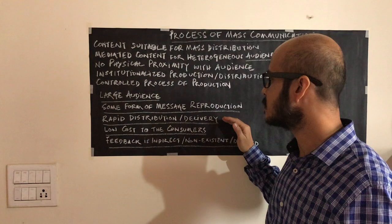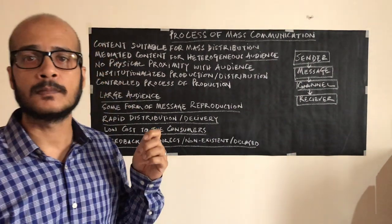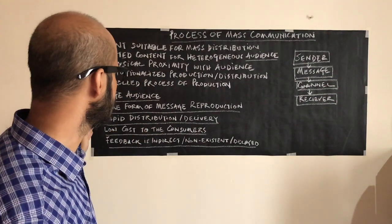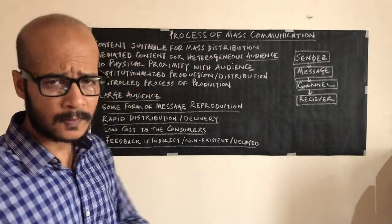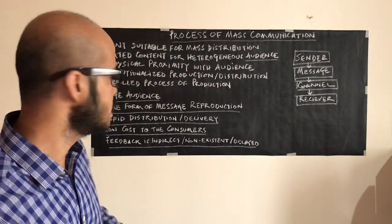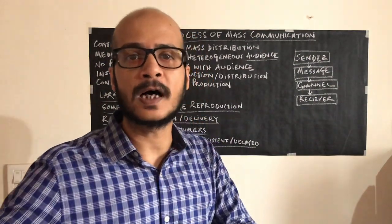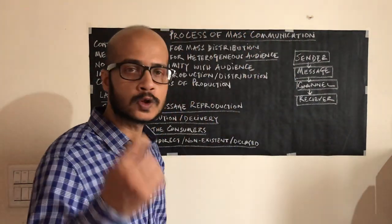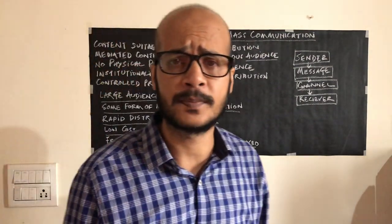Rapid distribution and delivery is the next feature. Because mass communication is device driven and mediated, the distribution becomes rapid. The content is recorded and spread across — through newspapers, the content is delivered in one go. I record this content, I upload it, it's done in one go. A newspaper company produces a newspaper and it passes on to people in one go — one day's production goes out to all the people.